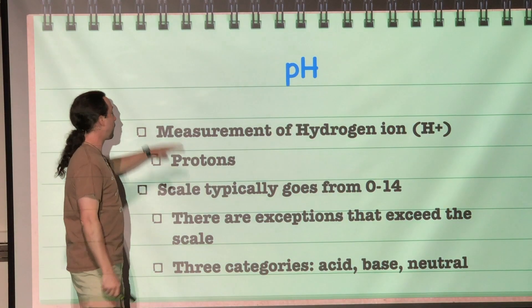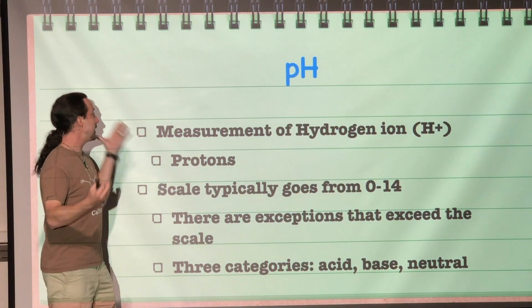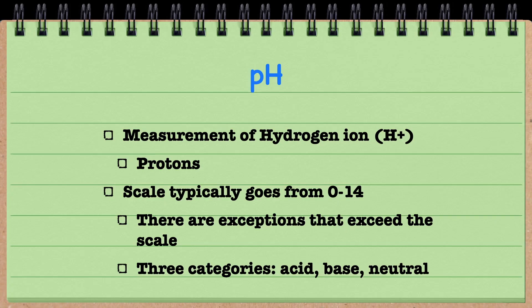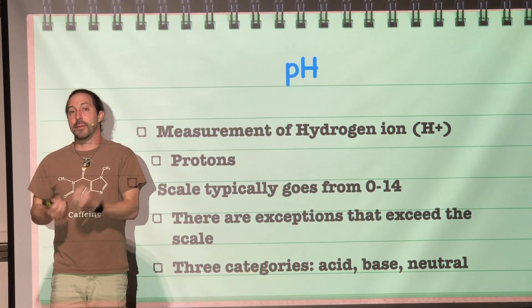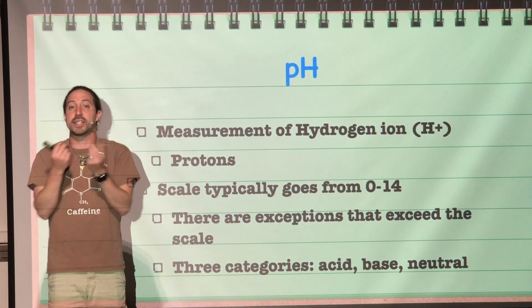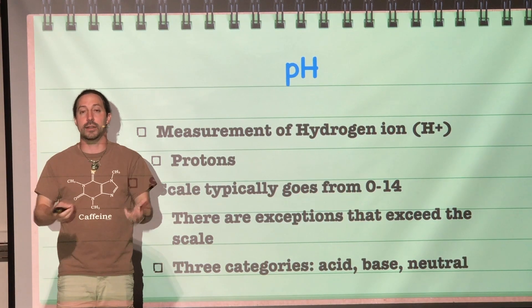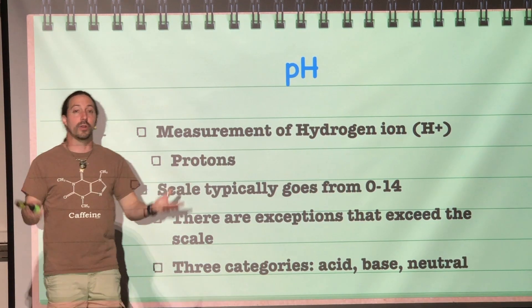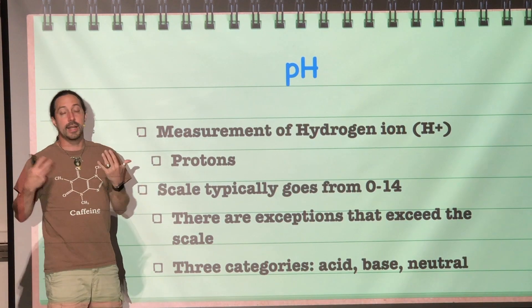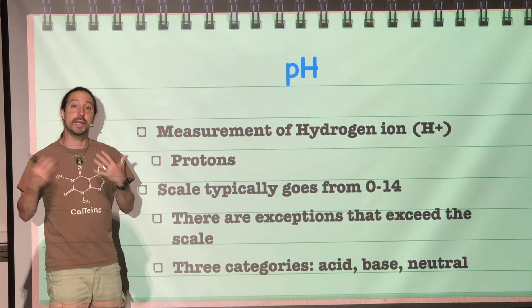So let's get started. First off, what is pH? Well, it is a measurement of the concentration of hydrogen ions. And hydrogen ions are only going to be protons because if a hydrogen atom loses its electron, the only thing left is just a single solitary proton. And that is what we're going to be looking at. So when we measure the concentration of hydrogen ions in a solution, that's going to be measuring the pH.